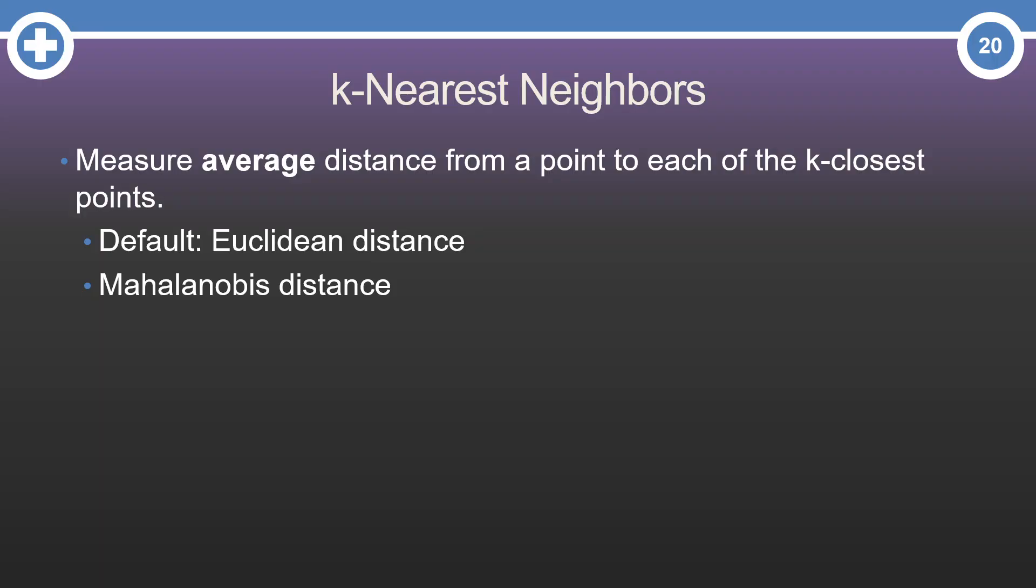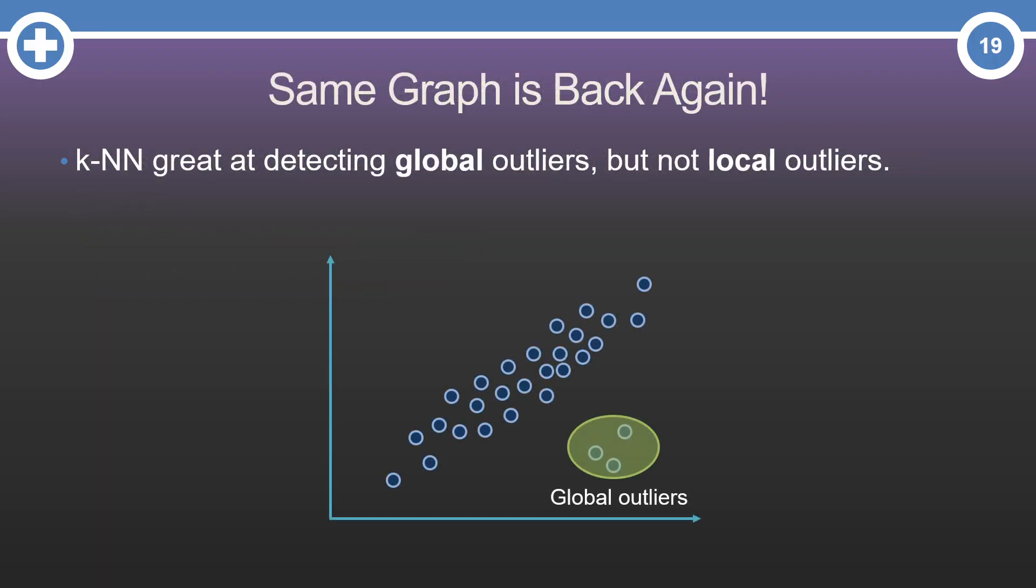Remember, KNN just measures the average distance from a specific point to each of the k-closest points, where close is defined traditionally by Euclidean distance. When looking at KNN, that is a great way to get global outliers.